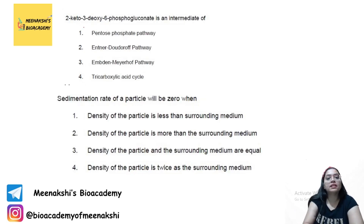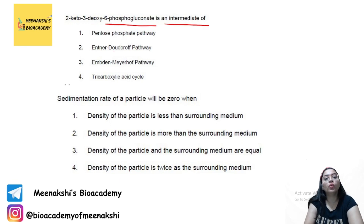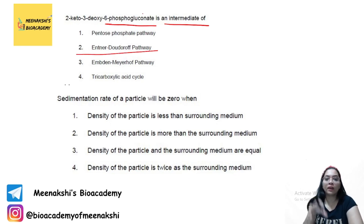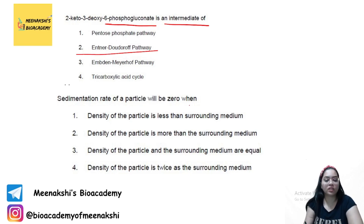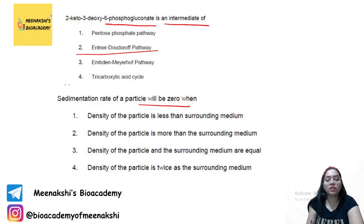2-keto-3-deoxy-6-phosphogluconate (KDPG) is an intermediate of the Entner-Doudoroff pathway. It breaks down into pyruvate and glyceraldehyde-3-phosphate.